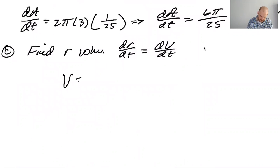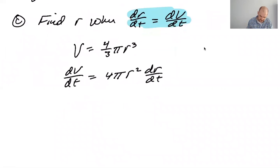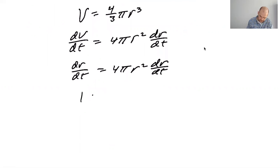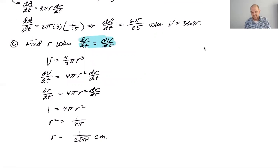Okay, so volume is 4/3 π r cubed. So then dV/dt, I feel like, I don't know, 4π r squared dr/dt. But since this is the case, you can basically say, you know, dr/dt equals 4π r squared dr/dt. So 1 is 4π r squared. So r squared is 1 over 4π. Gross. So r is 1 over 2√π centimeters. It's not a nice answer, but I don't know why, you know, why not? Why not? Sure.